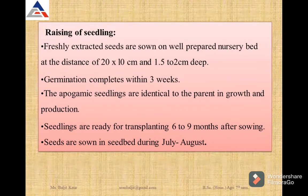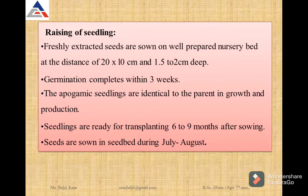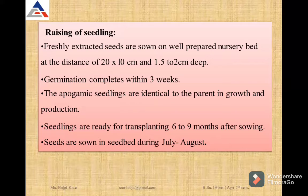Talking about propagation, firstly we have to raise the seedlings from seeds for rootstock purposes. Freshly extracted seeds are sown in well-prepared nursery bags at a distance of 20 by 10 cm and 1.5 to 2 cm deep. Germination of these seedlings is complete within 3 weeks. Apogamic seedlings are identical to the parent in growth and production. Seedlings are ready to transplant after 6 to 9 months after sowing, and seeds are sown in the seed bed during July–August.